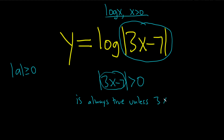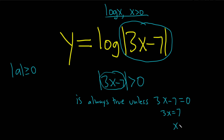So unless 3x minus 7 is equal to 0 — meaning 3x equals 7, so unless x is 7 thirds. Because when x is 7 thirds, this whole thing is 0, and you would get 0 greater than 0. Game over. So it's always true unless the inside is 0, which makes the whole thing 0.